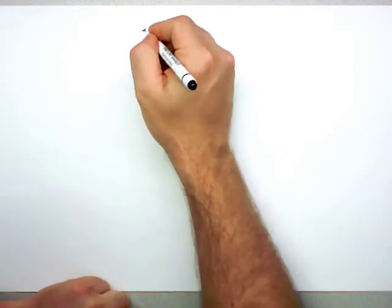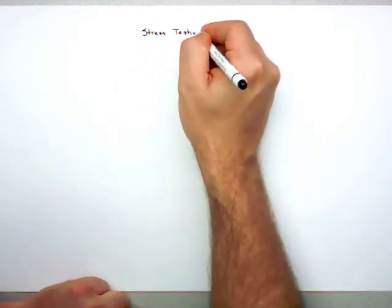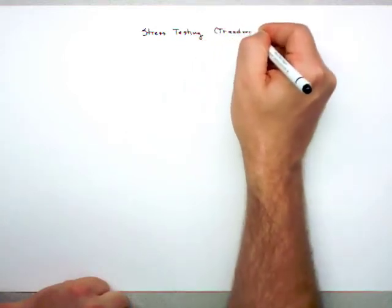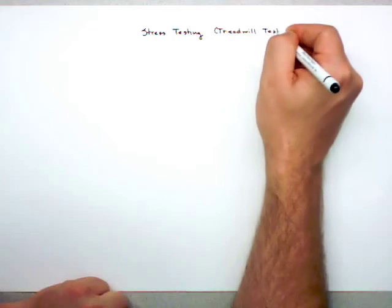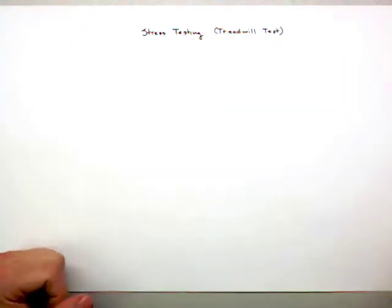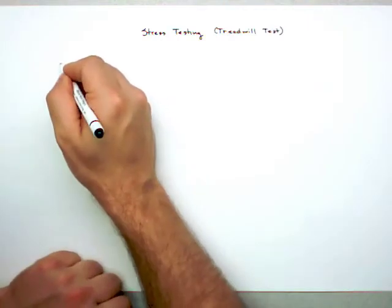A quick video on stress testing, or what's called a treadmill test, and what you're looking for on a treadmill test is changes in the EKG or ECG. Specifically, what you're looking for is changes in what's called the ST segment. We'll get to that in a second, but what I want to do first is describe what's going on.